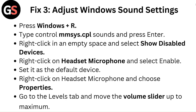Fix 3: Adjust Windows sound settings. Press Windows plus R. Type control mmsys.cpl sounds and press Enter. Right click in an empty space and select show disabled devices. Right click on headset microphone and select enable.